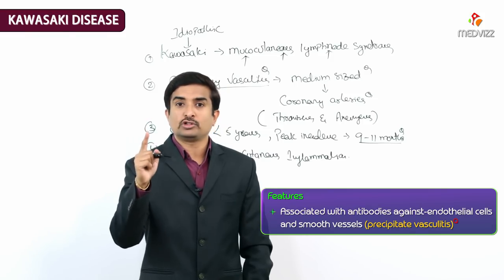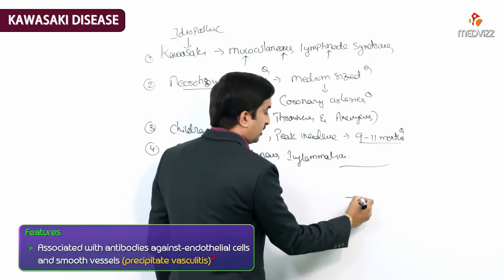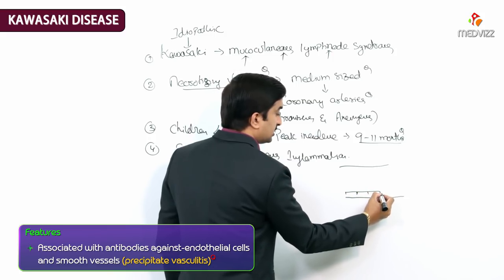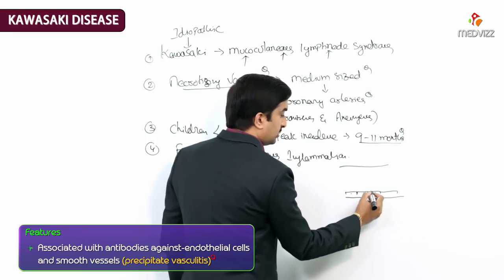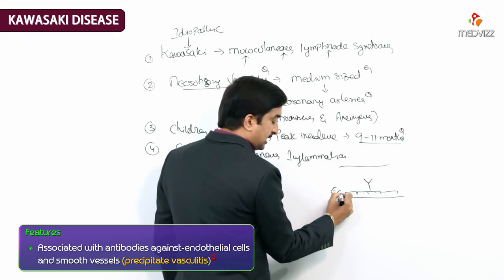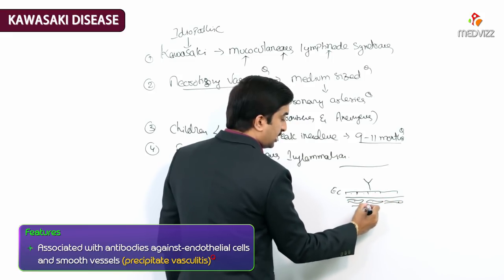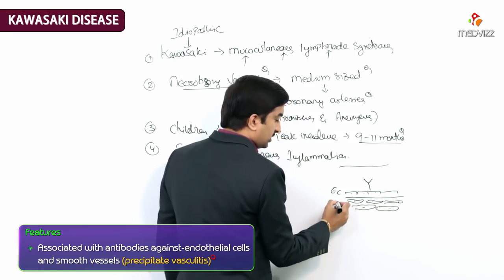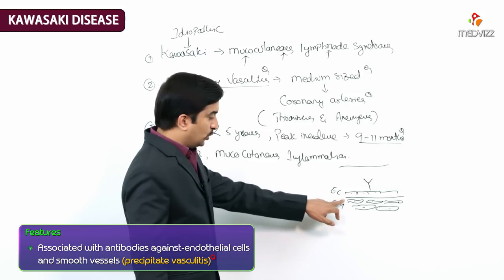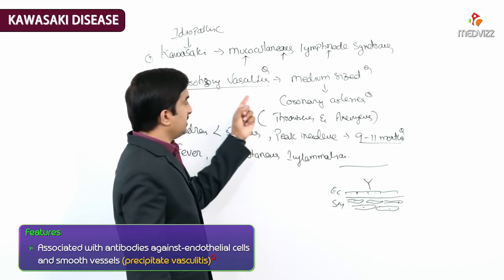Kawasaki disease is associated with antibodies produced against endothelial cells as well as smooth muscles, which precipitate vasculitis. The coronary artery's inner lining is made up of endothelial cells, and antibodies directed against these endothelial cells and smooth muscle cells of the coronary artery lead to necrotizing vasculitis.